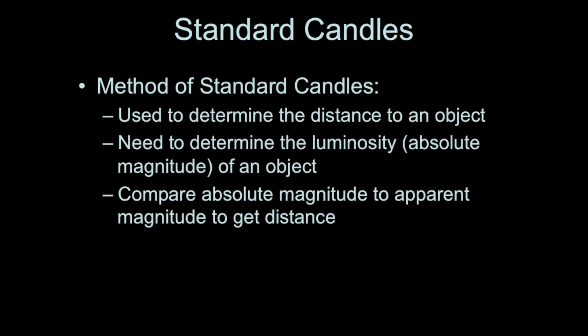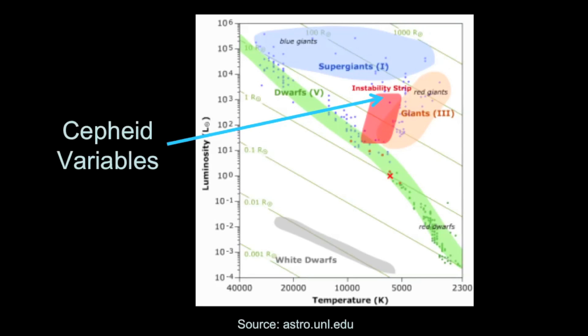The method of using a standard candle to determine distance is similar to what we discussed before with spectroscopic parallax. First you need to know the absolute magnitude of the object or the event, and compare that to the apparent magnitude that you measure through your telescope. That gives you a way to get the distance to that object.